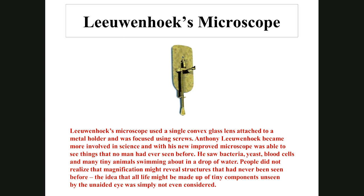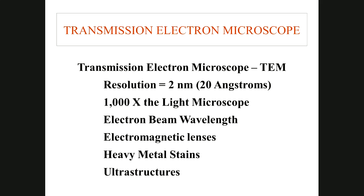The transmission electron microscope does not use white light — it uses a device that emits electrons. Its resolution is 2 nanometers, or 20 angstroms, a thousand times better than the light microscope. It can magnify up to a million times — a thousand times what you can see on a light microscope.